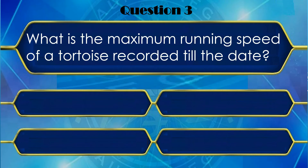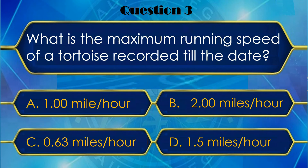And your third question is: What is the maximum running speed of a tortoise recorded till date? Ek tortoise ki maximum recorded speed kitni hai? And your options are: A. 1 mile per hour, B. 2 miles per hour, C. 0.63 miles per hour, or D. 1.5 miles per hour.